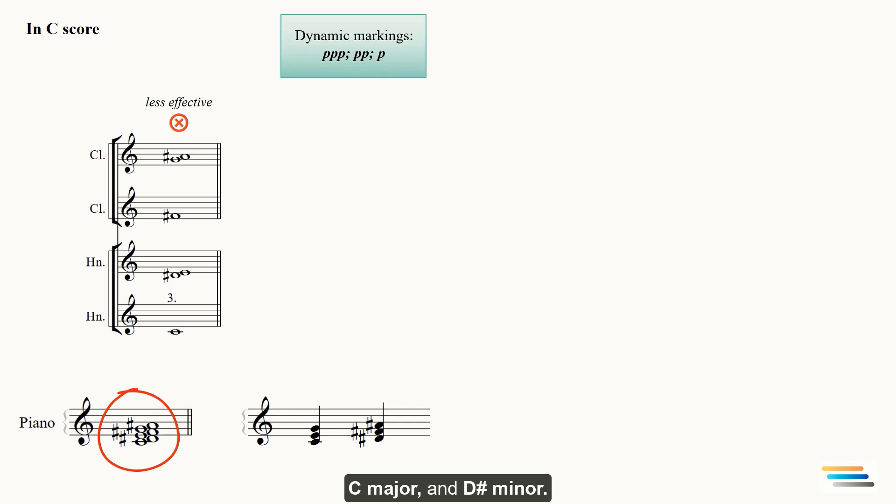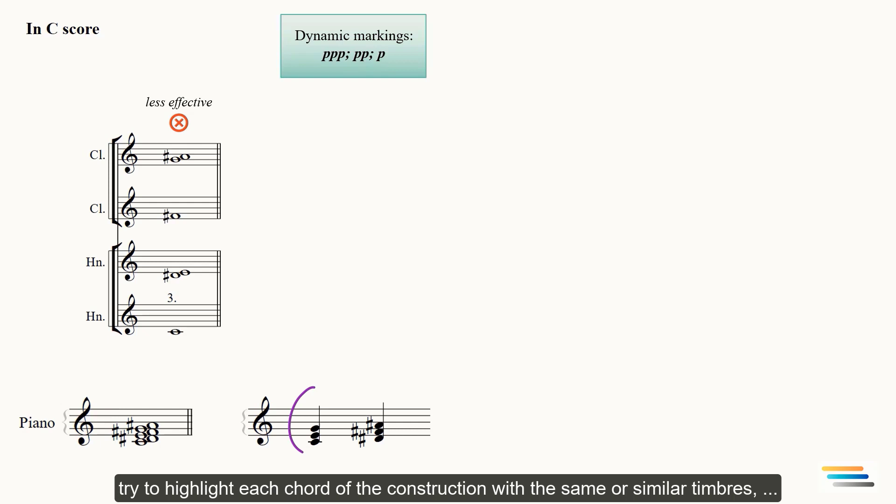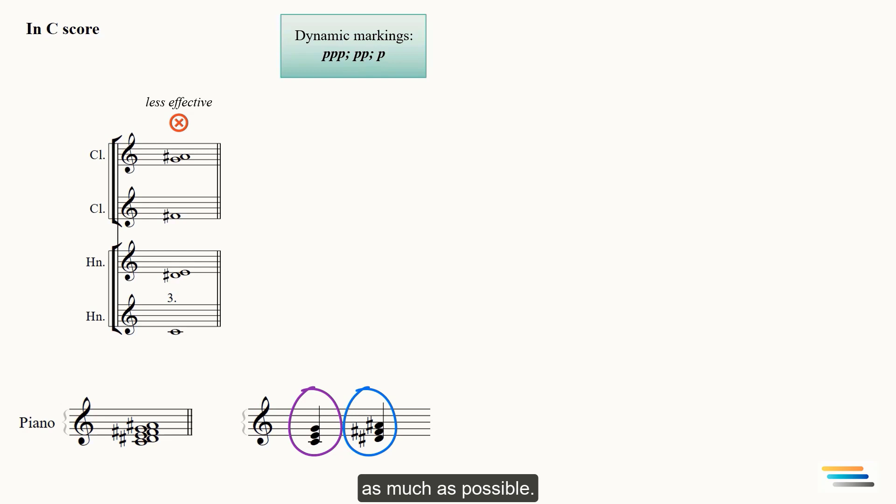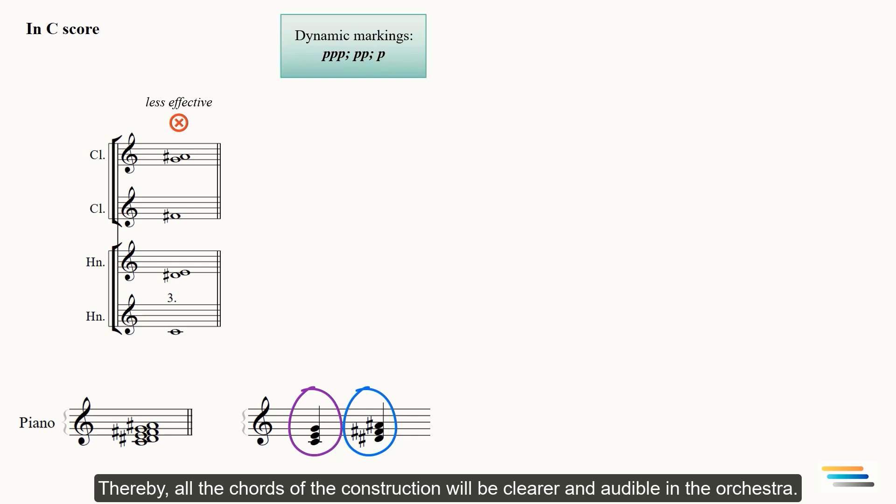Now the chord is understandable. When you are going to voice polychords, try to highlight each chord of the construction with the same or similar timbres as much as possible. Thereby, all the chords of the construction will be clear and audible in the orchestra.